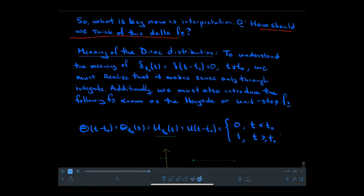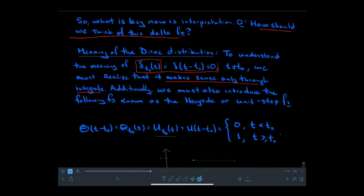In this section we're going to talk about the meaning of the Dirac distribution. The Dirac distribution — I will typically use the symbol delta subscript t-naught of t — is the same as delta of t minus t-naught, where t-naught horizontally shifts the location of that impulse spike in time. We must realize that this makes sense only through integrals; it's not really a function otherwise.